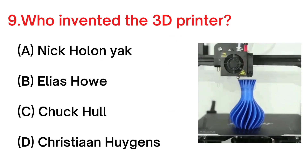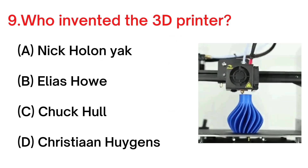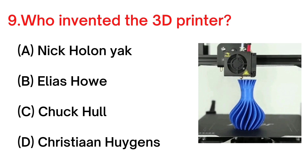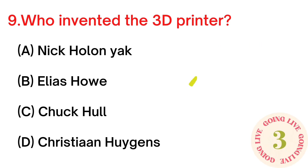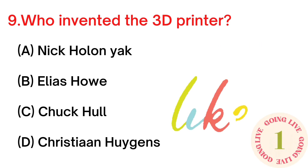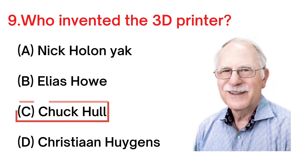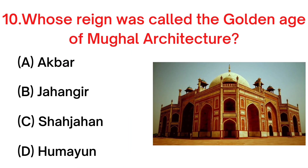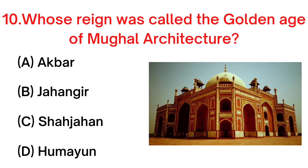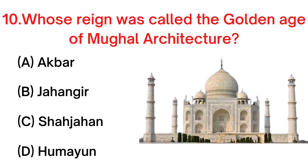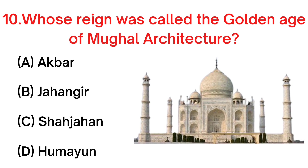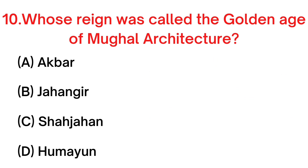Your next question: who invented the 3D printer? A. Nick Holonyak, B. Alias Howe, C. Chakhal, D. Christian. Your next question: whose reign was called the golden age of Mughal architecture? A. Akbar, B. Jahangir, C. Shah Jahan, D. Humayun.